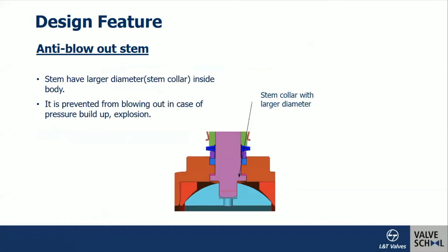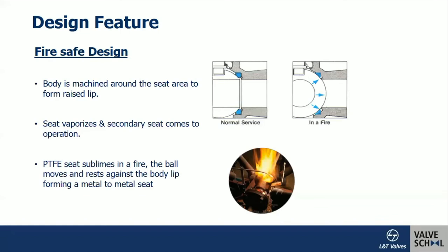To illustrate the fire-safe design: during normal service the soft seat (shown in blue) provides downstream sealing. If the soft seat gets sublimated or extinguished due to external fire, a raised lip provided on the body comes into contact with the ball, ensuring sealing and preventing further fluid flow. This provides effective sealing during a fire event, though the seals and seats must be replaced afterwards.